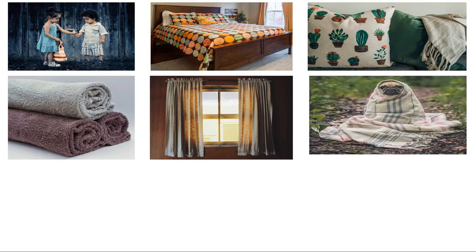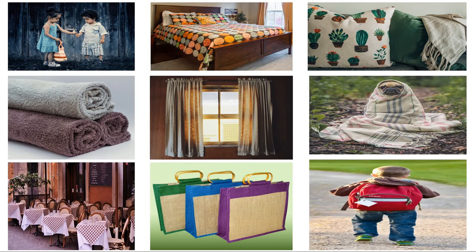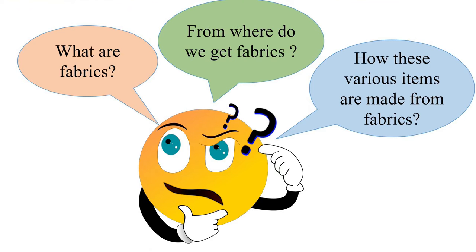Look around you and you will notice that your clothes, bed sheets, pillow covers, towels, curtains, blankets, table cloths, shopping bags, and even your school bags — all these items are made up of different kinds of clothing material. You can notice the difference by feeling and touching them. Actually, all of these items are made up of different kinds of fabrics. So what are fabrics, where do we get fabrics, and how are these various items made from fabrics?